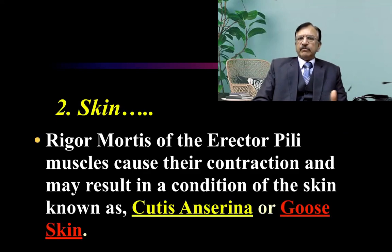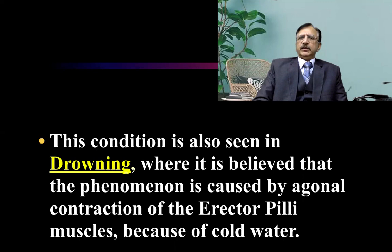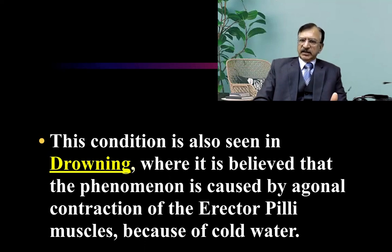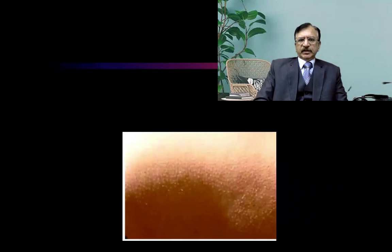In the skin, rigor mortis of the erector pili muscles causes contraction, resulting in erection of the hair — known as cutis anserina or goose-like skin. The skin becomes puckered due to contraction of the erector pili muscles. This condition is also seen in drowning, where it is believed the phenomenon is caused by agonal contraction of the erector pili muscles due to cold water. A picture shows the erection of hair by contraction of the erector pili muscles and the resulting puckered skin.